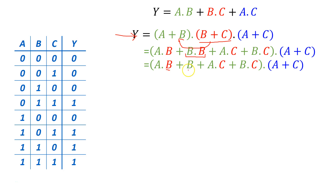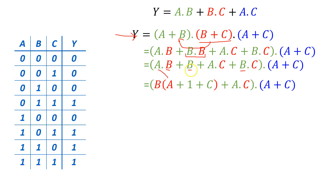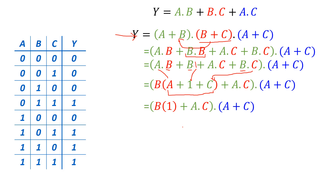After factoring out B, we have B AND (A OR 1 OR C), plus the AC term. Since anything ORed with 1 results in 1, the expression A OR 1 OR C equals 1. So we have B AND 1, which is simply B, plus AC, all ANDed with (A OR C).